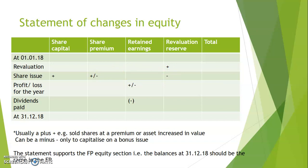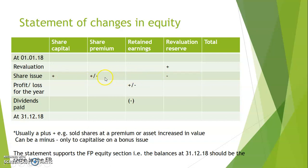Refer to the previous video for more detail on the rules for bonus issues. Just to clarify: revaluation reserve is only used when there's a revaluation of an asset. Share capital is used when shares are issued. Share premium is used when shares are issued above par. The minus symbols are deducted when we need to capitalize a bonus issue — for example, minus 10 from share premium, minus 10 from revaluation reserve, plus 20 in share capital.